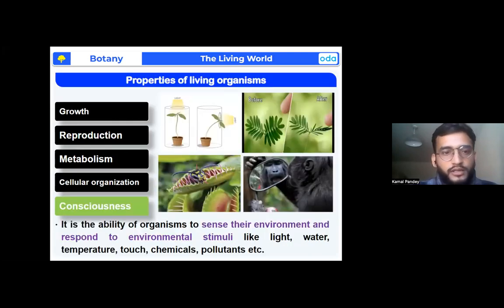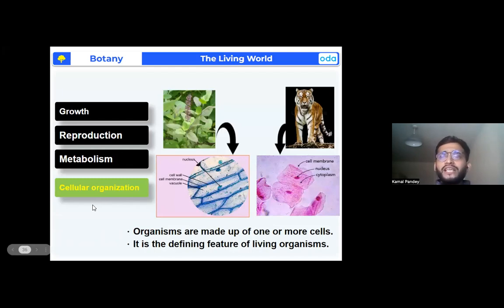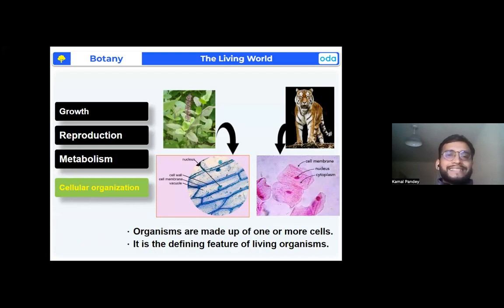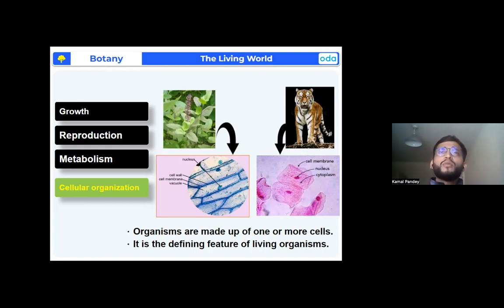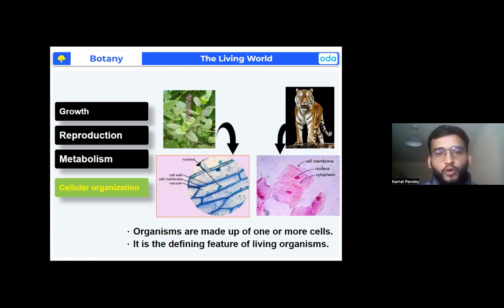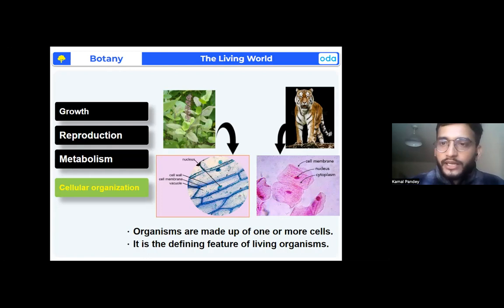Next is cellular organization. If any organism is living, the most basic requirement is that its body must be made up of cells. Organisms can be made up of one cell — unicellular — or more than one cell — multicellular. So cellular organization is a defining feature of a living organism. If any organism is made up of cells, it is a living organism.